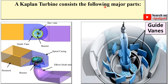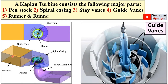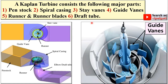A Kaplan turbine consists of the following major parts: penstock, spiral casing, stay vanes — shown here in yellow — guide vanes, shown in blue, then runner and runner blades, shown in purple, and finally the draft tube. Let us start a brief discussion of all these parts one by one.